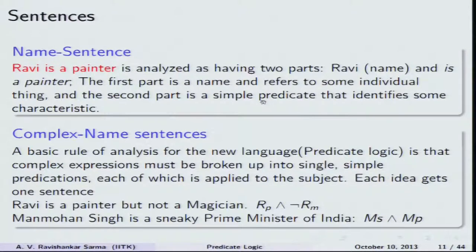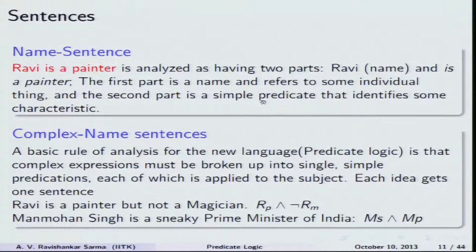For example, 'Ravi is a painter' is analyzed in two parts: first is the name Ravi, and next is 'is a painter.' The first part is a name and refers to some individual thing — a singular term represented by constants a, b, c. The predicate is represented by a capital letter. The sentence has two parts: the name Ravi, represented by a constant, and 'is a painter,' which represents the predicate — a characteristic that identifies being a painter as a characteristic of the individual human being Ravi.